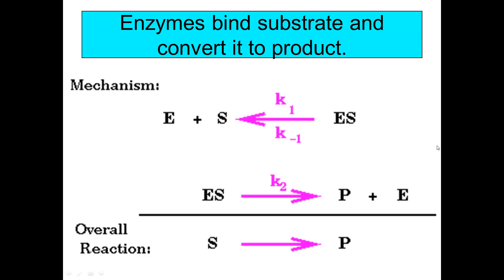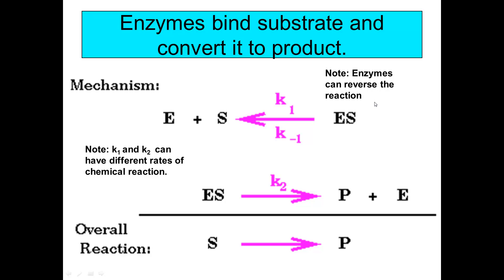Enzymes bind substrate and convert it into a product, forming this enzyme-substrate complex. The enzyme-substrate complex then transfers to product. You can think of it as going from substrate to product with rate constants K1, K-1, and K2. The reaction can go both ways, and the different reaction rates — K1, K-1, and K2 — are what drive the reaction forward from substrate to product. Enzymes can reverse the reaction, and K1 and K2 can have different rates, forcing the reaction to go forward in a particular direction.